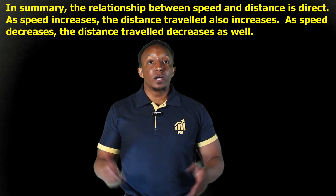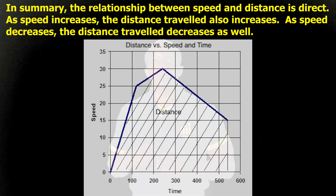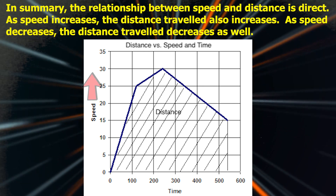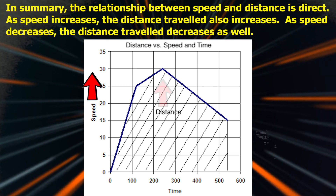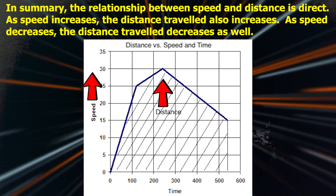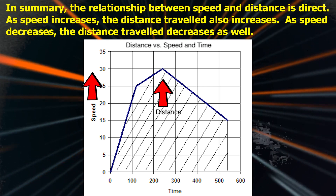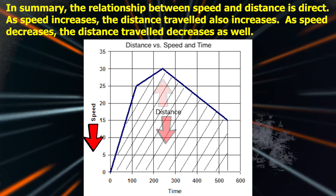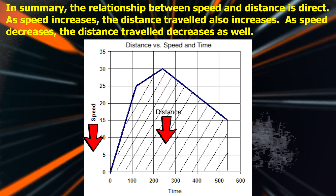In summary, the relationship between speed and distance is direct. As speed increases, the distance traveled also increases. As speed decreases, the distance traveled decreases as well.